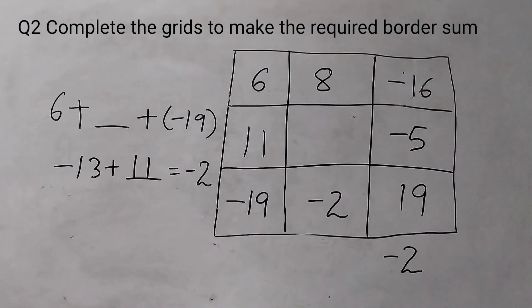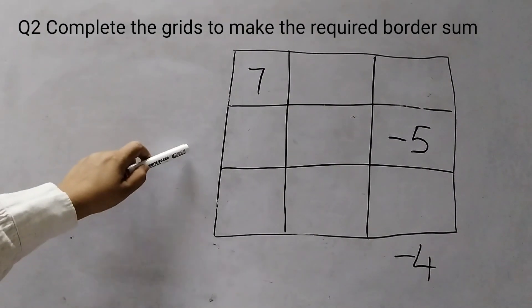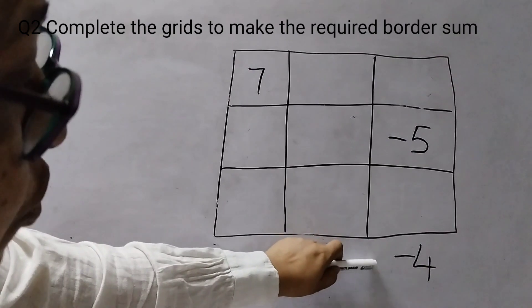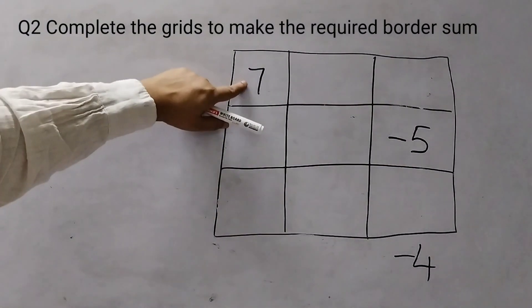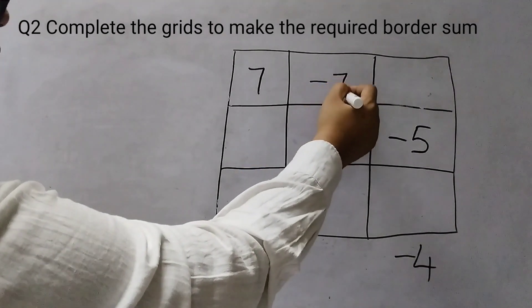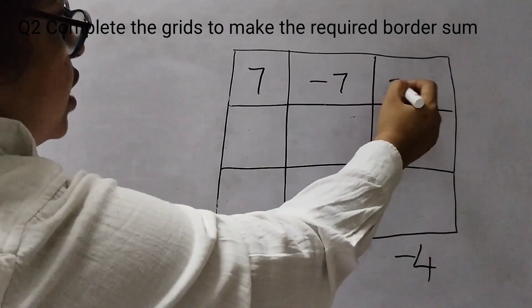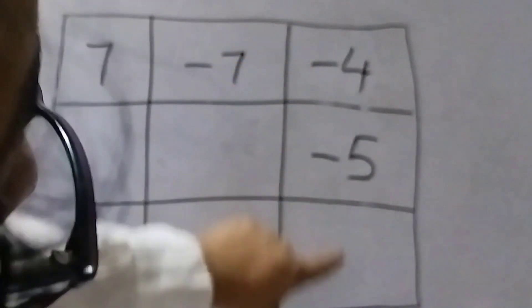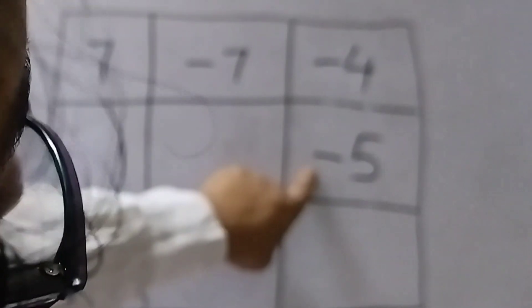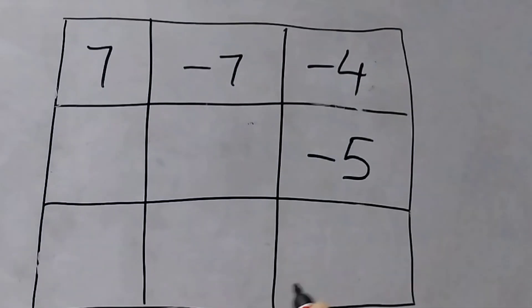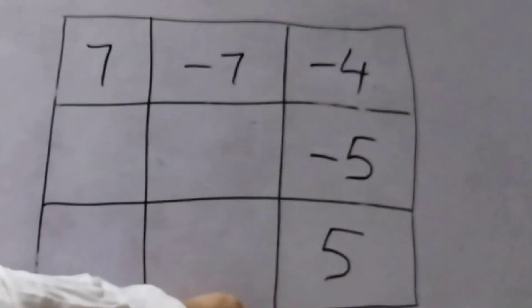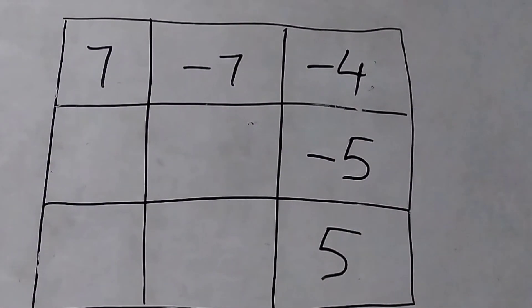Moving on to the third grid, where we have 7 and minus 5, and the border sum is minus 4. Starting from the top row: if I put minus 7, then 7 plus minus 7 is 0, and I want minus 4, so I put minus 4 here — top row done. For the right column, minus 4 is already the border sum. Minus 5 is there, so adding 5 gives minus 5 plus 5 equals 0, and 0 plus minus 4 is minus 4. This is an easy trick to follow.